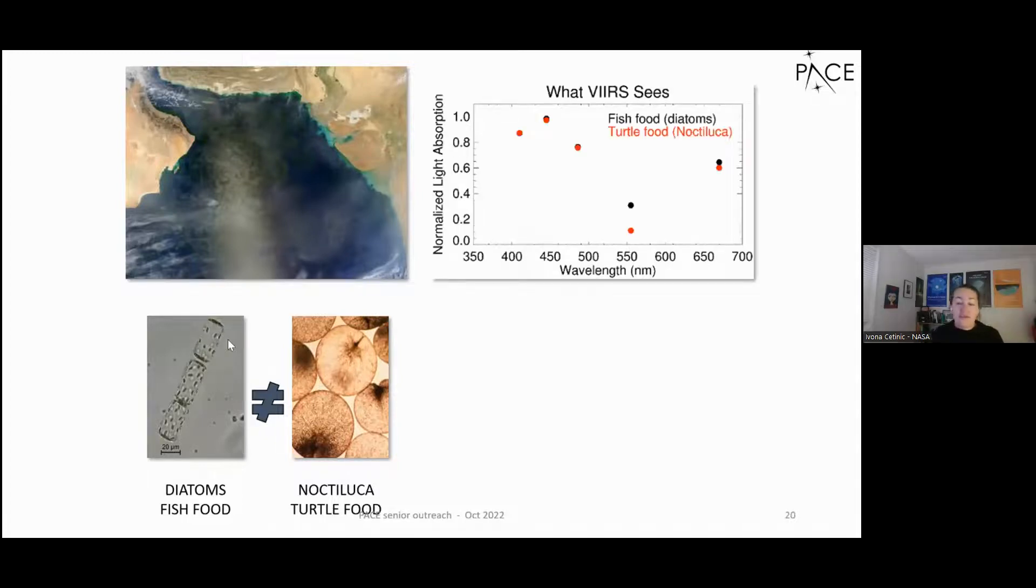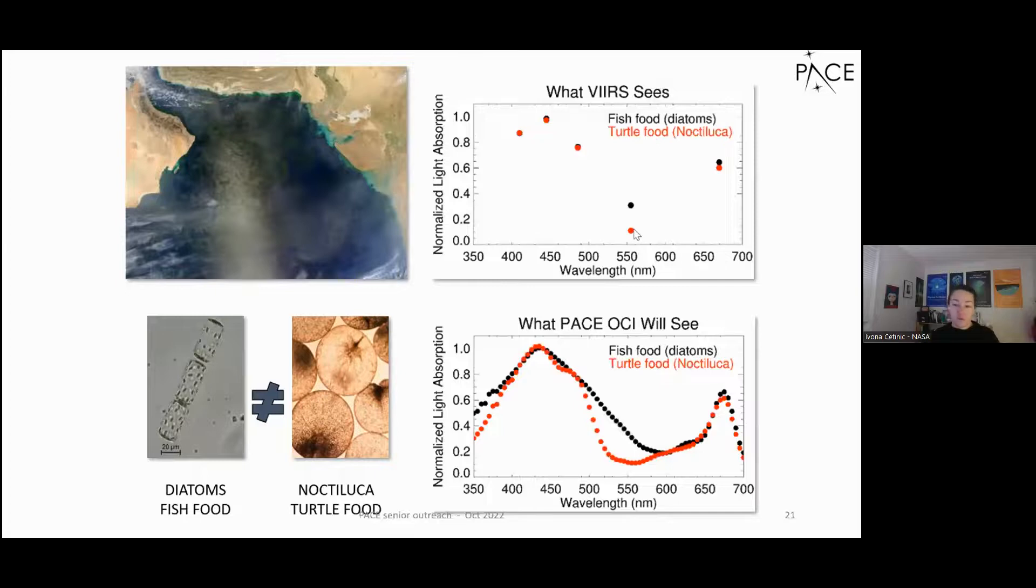This is back again to physics, I know. But the red dots are showing you the color of the turtle food. The black dots that are hidden on the red are showing you the color of the fish food. And without going in further details, you can see that there's really no difference between these dots, minimal difference, not enough difference to make a really good distinction. And this is how we're seeing these five dots is how we currently see in the ocean.